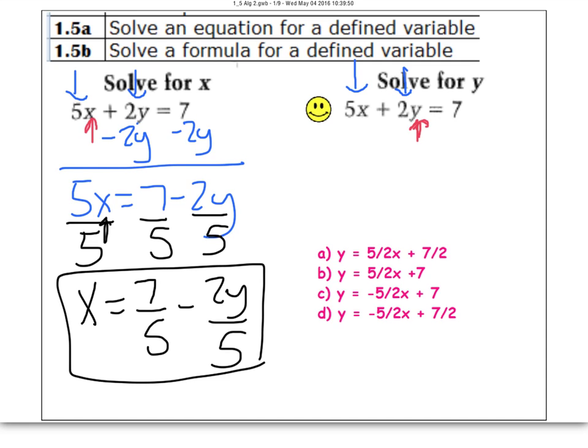So 2 is the closest to it, 5x is the furthest, so move the 5x first. This is a positive 5x, so to move that I'm going to subtract 5x from both sides and write 2y equals 7 minus 5x.